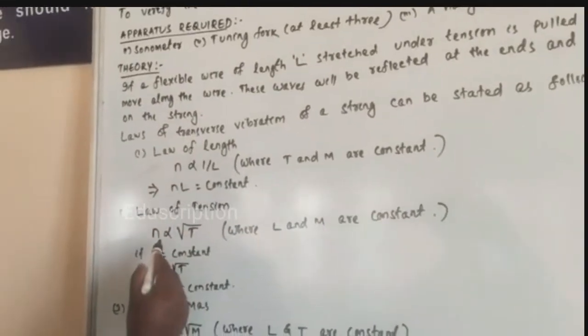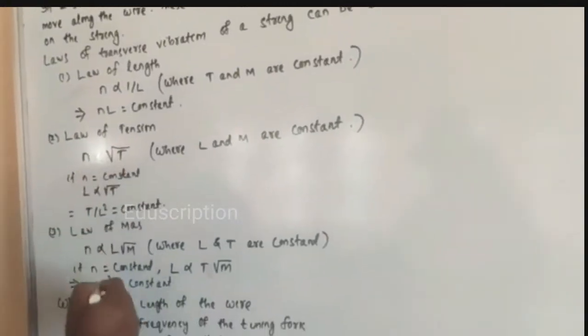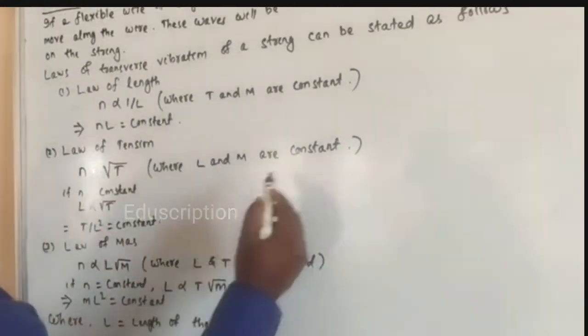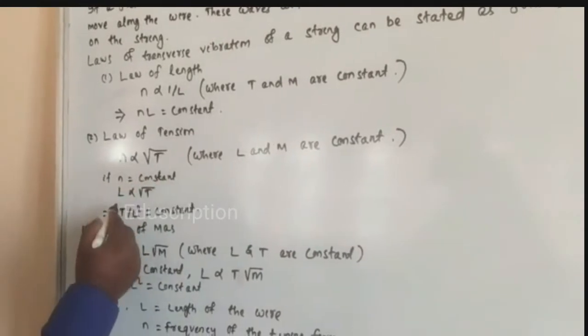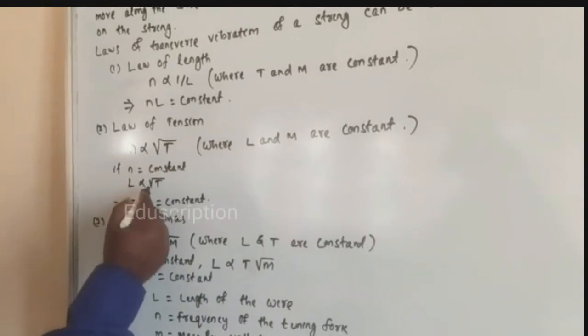Then law of tension: n is directly proportional to square root of T, where L and M are constant. If n equal to constant, then L is directly proportional to T.